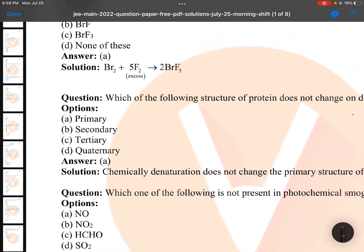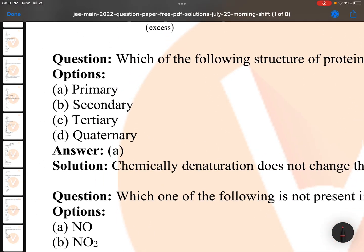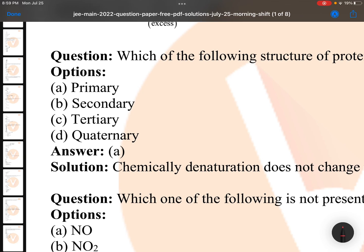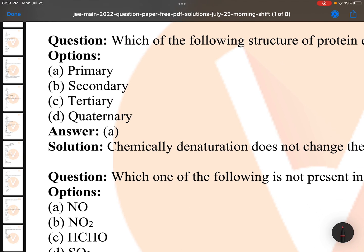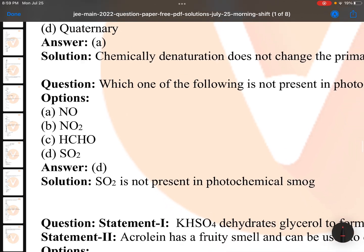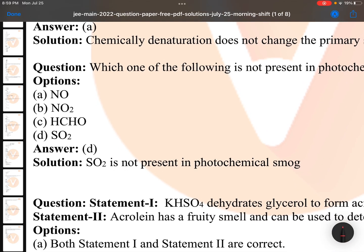Which of the following structure of protein does not change? Primary structure is fixed. Secondary, tertiary, and quaternary can be disturbed. This question you got in earlier JEE Mains also.